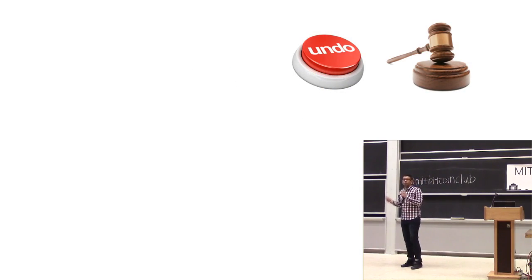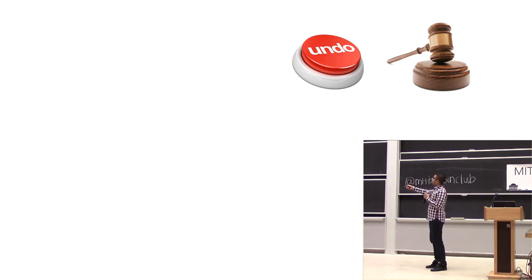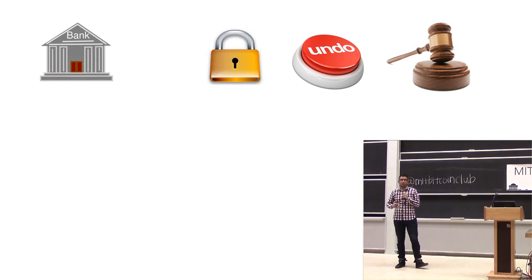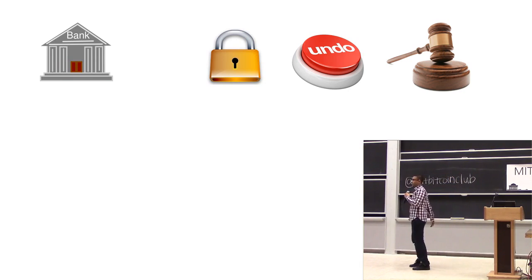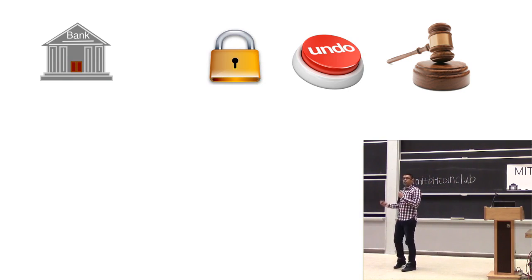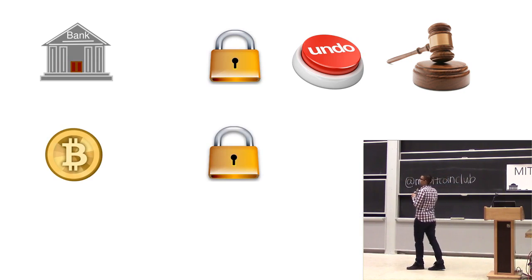Banks have an undo button. This is an important and key property of the traditional financial system — you can reverse transactions and recover money. You also have the whole force of law enforcement and the legal system, which allows you to go after perpetrators of financial crimes, and that acts as a huge deterrent. Ross explains how it's in fact these factors that really keep the financial system secure. In Bitcoin, we don't have the ability to undo or reverse transactions, and it's really hard to go after people who steal money precisely because of the pseudonymity of the system.